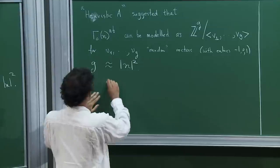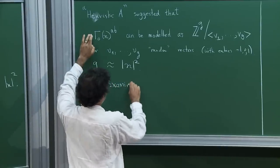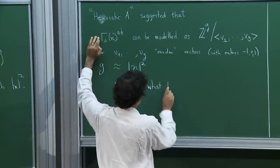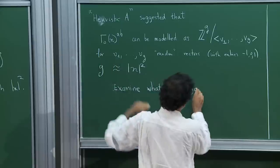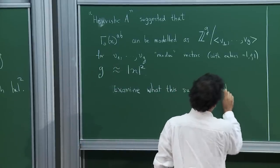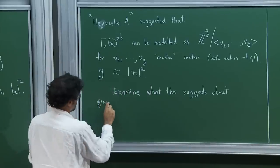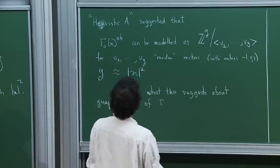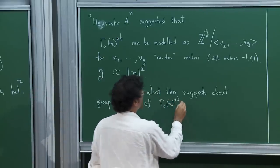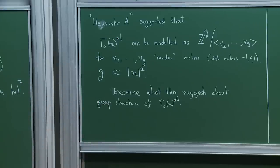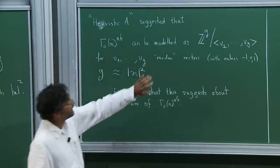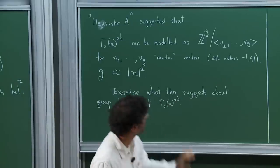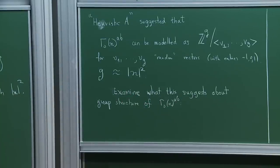Let's examine what this says about the actual group structure — is it a cyclic group or a product of cyclic groups? I'll explain that this heuristic gives you a wrong picture if you ask such a fine question. There's something essentially missing with this, and it's important to be aware of that.